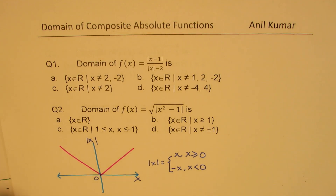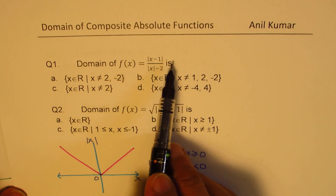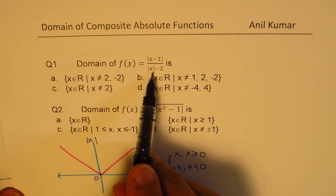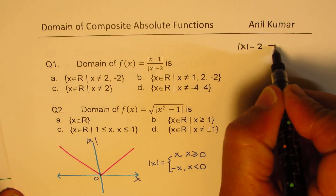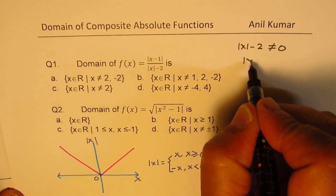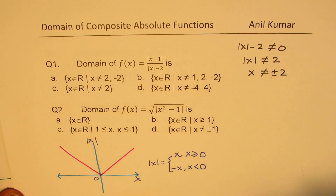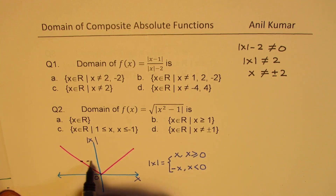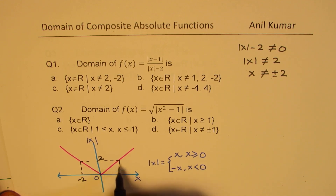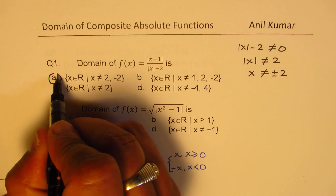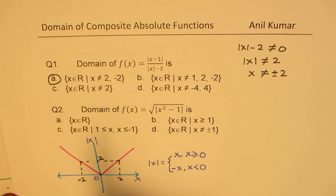For question one, the domain of the absolute value of (x minus 1) over the absolute value of (x minus 2): the denominator cannot be 0, so the absolute value of (x minus 2) should not equal 0. That means the absolute value of x is not equal to 2, so x is not equal to plus or minus 2. All other values are in the domain. Therefore, the answer is option A: x belongs to real numbers where x is not equal to +2 or -2.